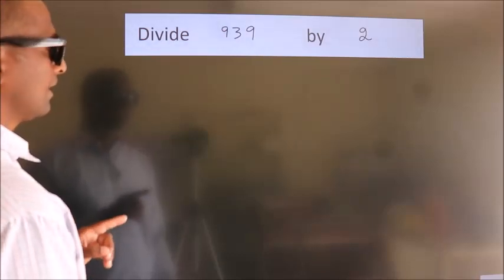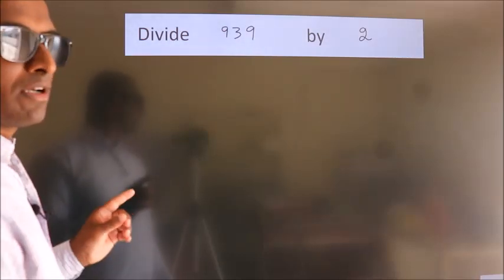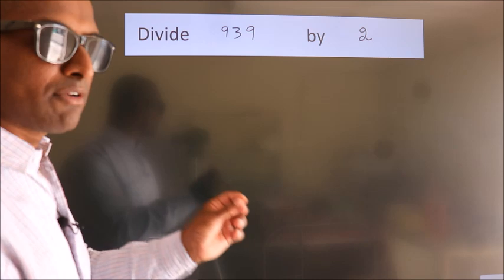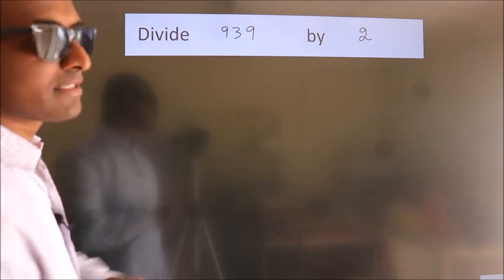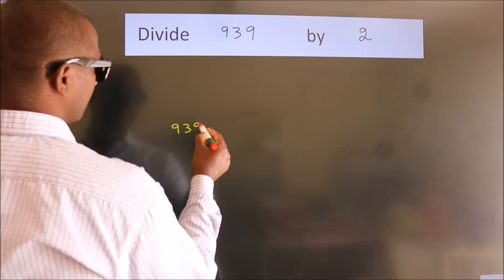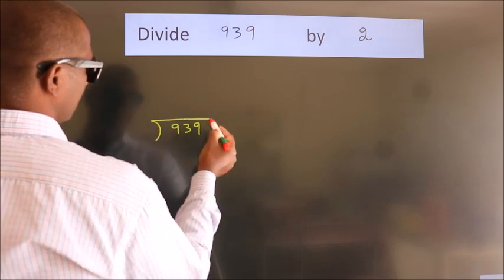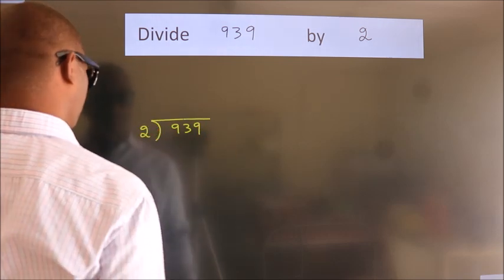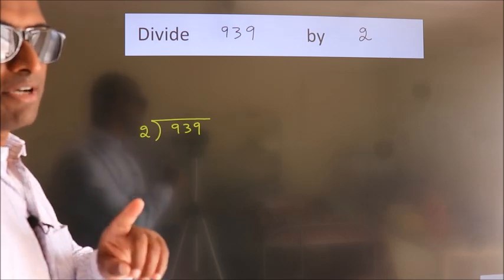Divide 939 by 2. To do this division, we should frame it in this way: 939 here, 2 here. This is your step 1.